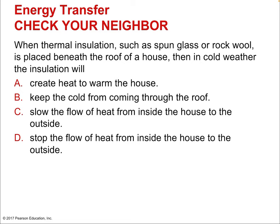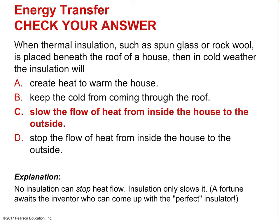When thermal insulation such as spun glass or rock wool is placed beneath the roof of a house, in cold weather it will: A) create heat to warm the house, B) keep the cold from coming through the roof, C) slow the flow of heat from inside to outside, or D) stop the flow of heat entirely. The answer is C — it slows the flow. Never stops it, and obviously cold doesn't flow. Only heat flows.